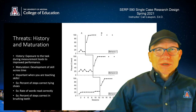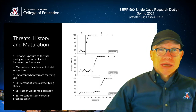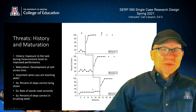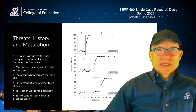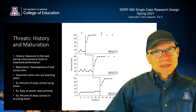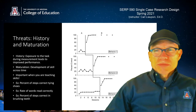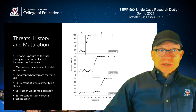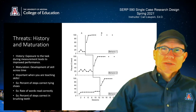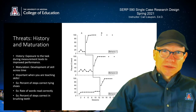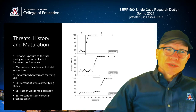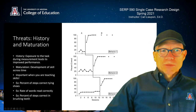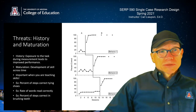So what is the big problem you can run into with a multiple baseline design with a continuous baseline for each participant? Well, two things really. History and maturation are your biggest challenges with a continuous baseline. History means exposure to the task during measurement that leads to improved performance. Maturation means development of the skill across time simply because of what time offers to the client in terms of development.